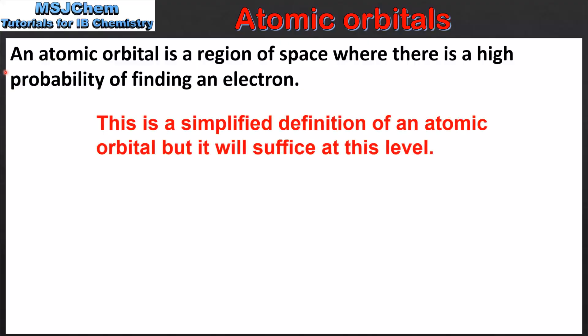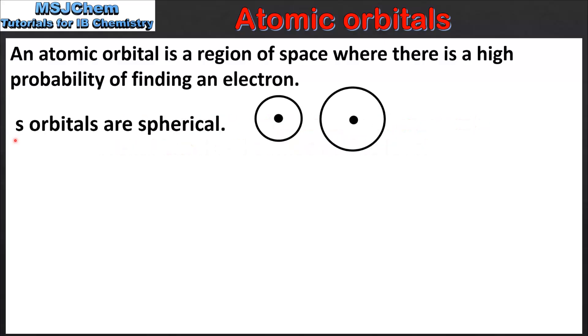Before we do so, here we have a definition. An atomic orbital is a region of space where there is a high probability of finding an electron. Starting with S orbitals, which are spherical — on the right we can see the shapes of a 1s orbital and a 2s orbital.